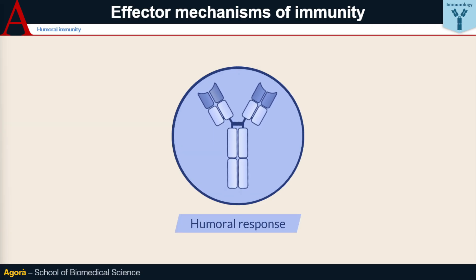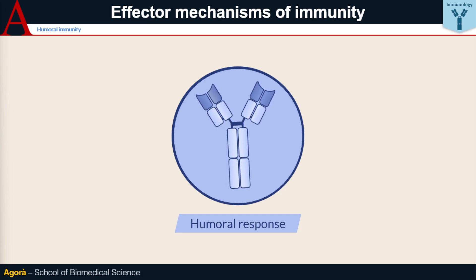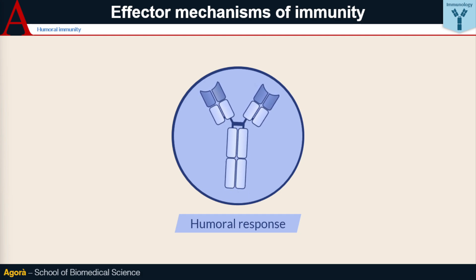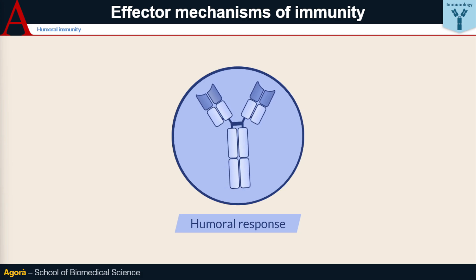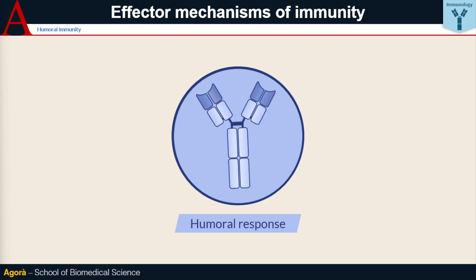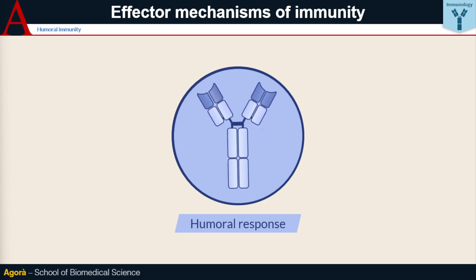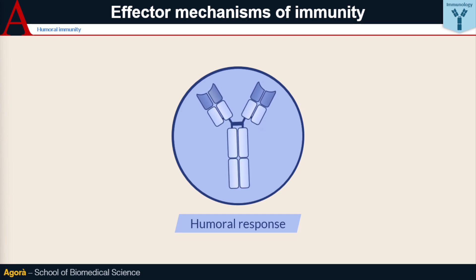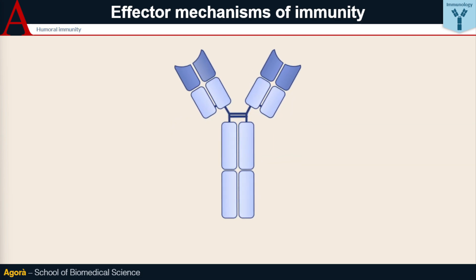Immunity provided by antibodies produced by B cells — and thus an arm of adaptive immunity — is often called humoral, from 'humor' meaning liquid, as antibodies are free in the body's fluids. This is a misnomer, however, because other systems such as complement also participate in the humoral response, although there are no adaptive mechanisms involved.